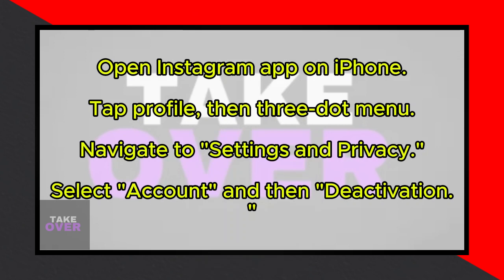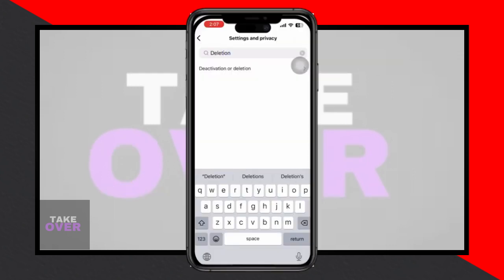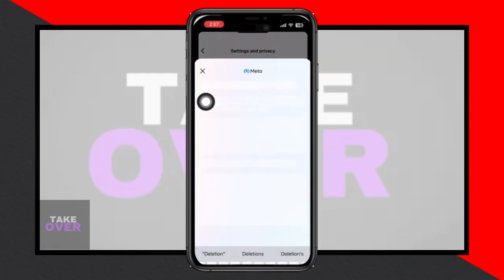To start, open your Instagram app on your iPhone. Once it's open, locate and tap on your profile icon, typically found in the bottom right corner of the screen. Next, you'll want to tap on the three horizontal lines in the top right corner to access the menu.